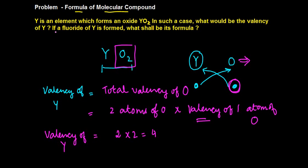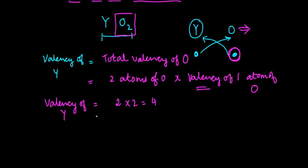Then comes the next question. If a fluoride of Y is formed, what shall be its formula? If we form a fluoride of Y, right? Then one element will be Y and the other one will be F for the fluoride.